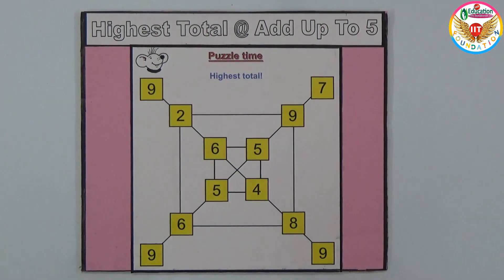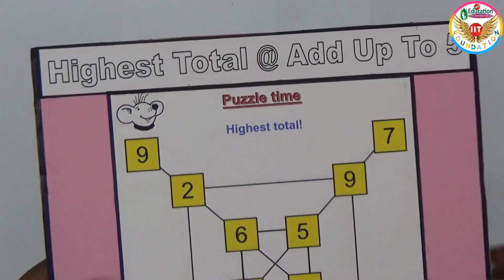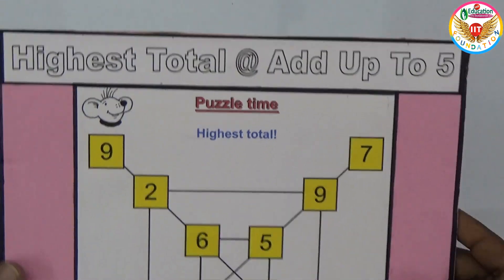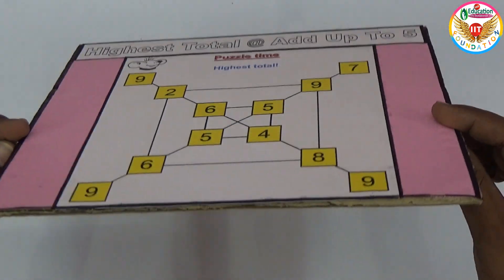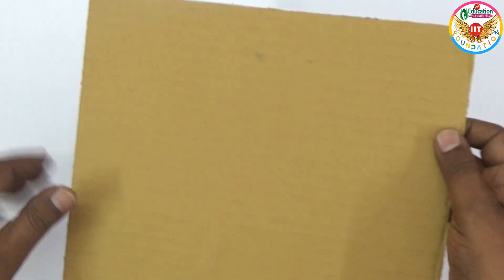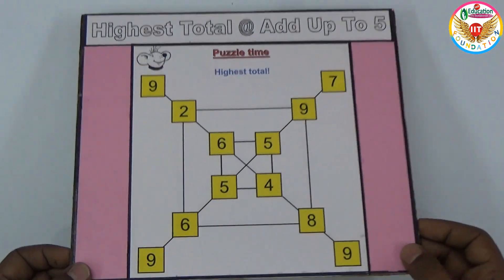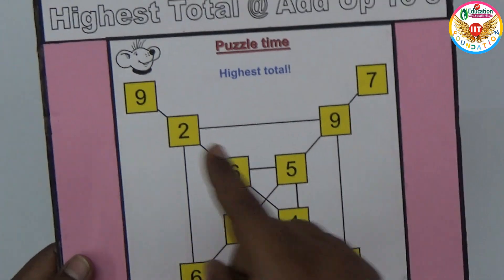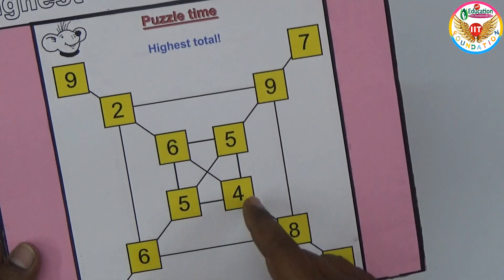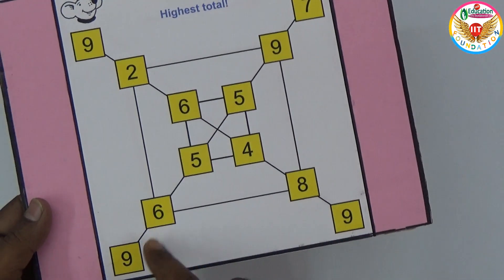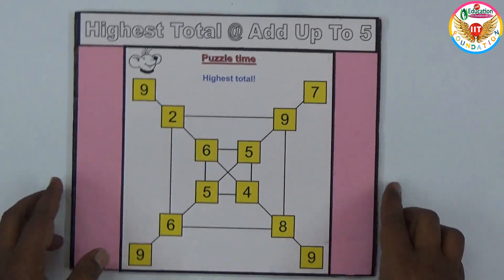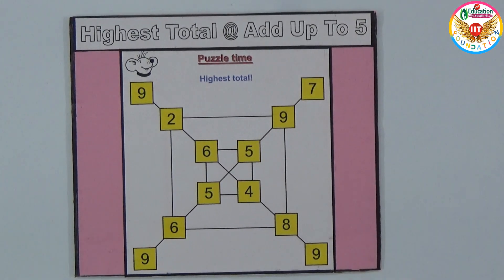Welcome to educational channel. Here is an interesting project - the highest total add up to 5. Making this project is simple: on cardboard I prepared one with paper. Here some numbers are arranged: 9, 2, 6, 5, 4, 5, 9, 7, 9, 8, 6, 9. This is specially based on the addition concept.